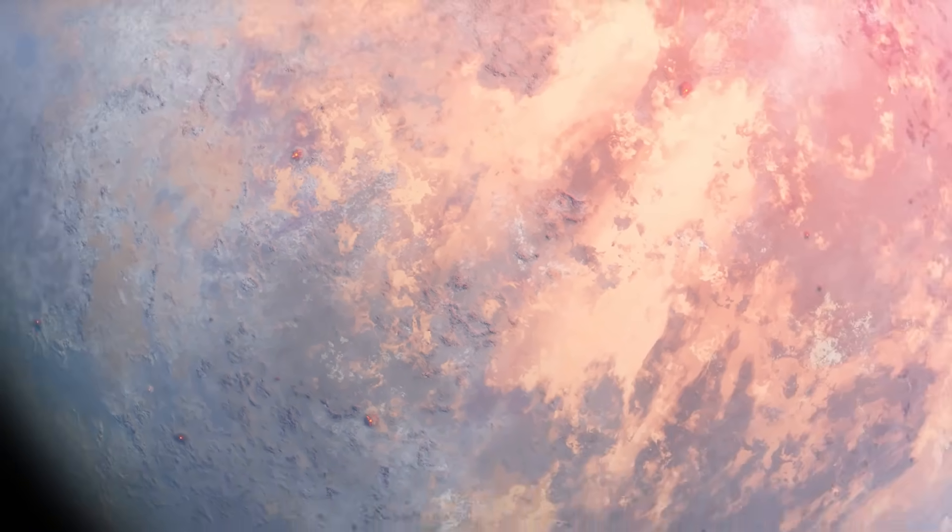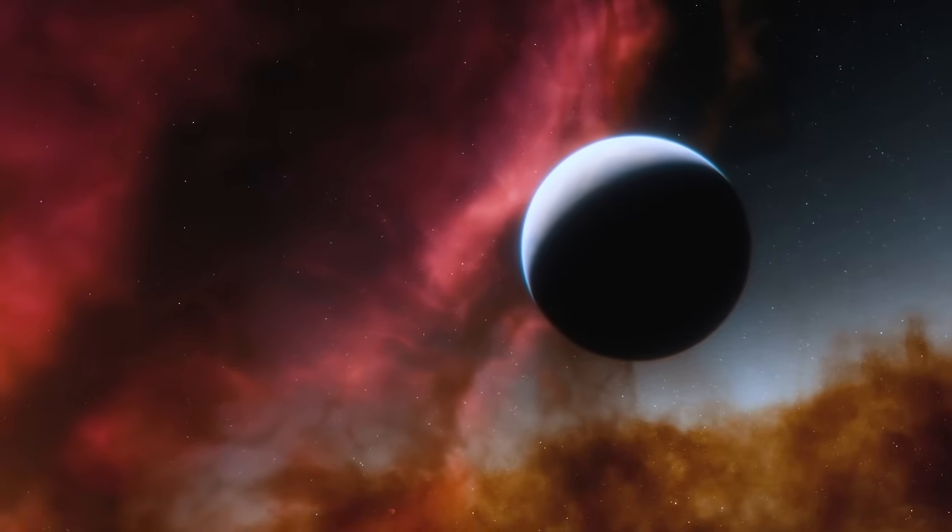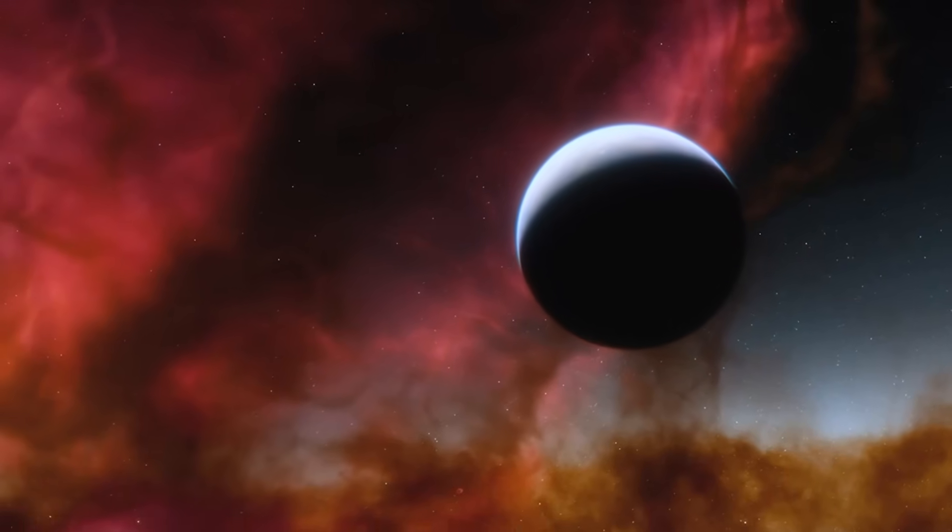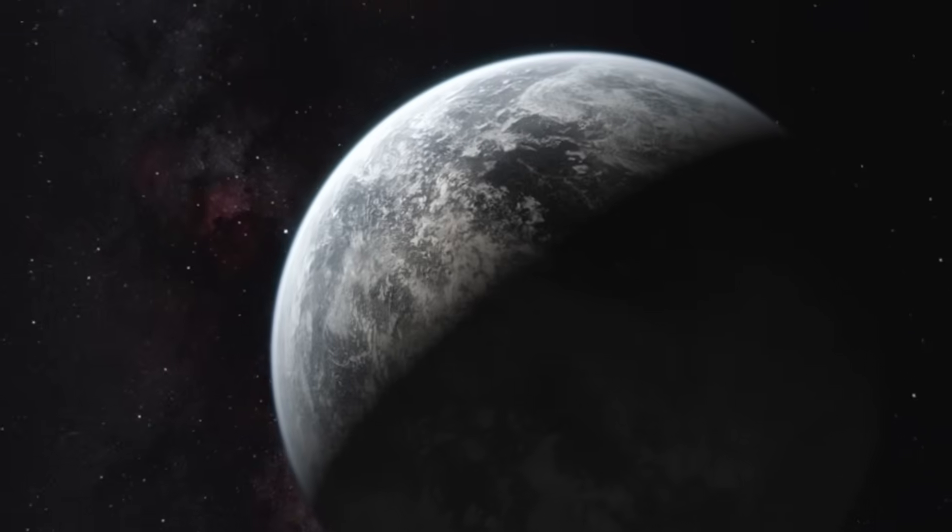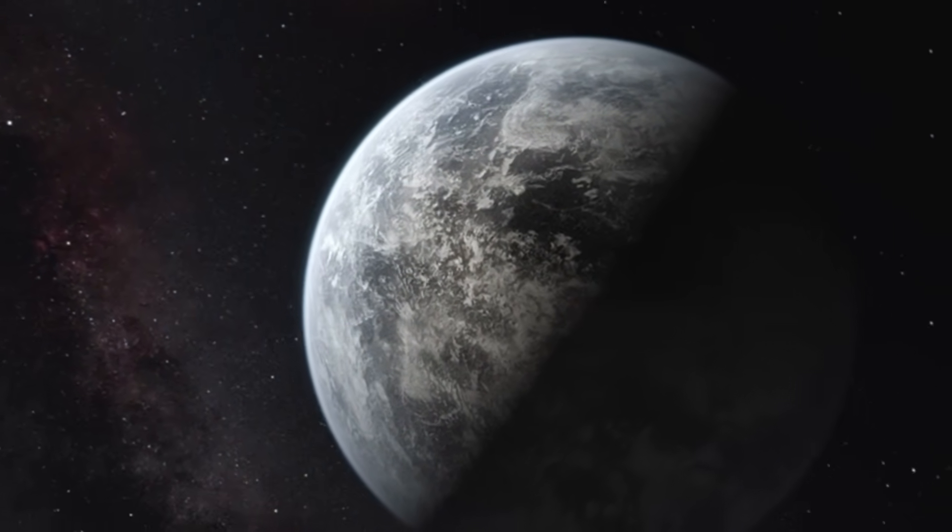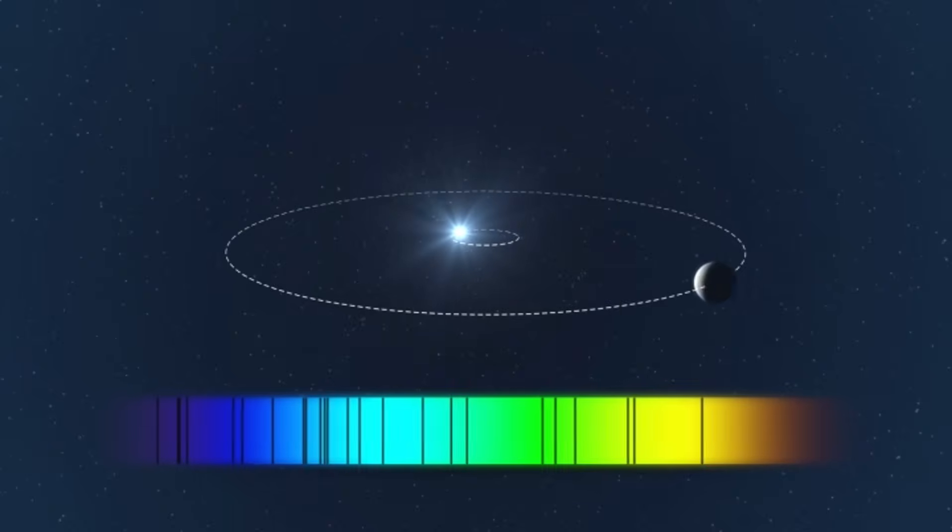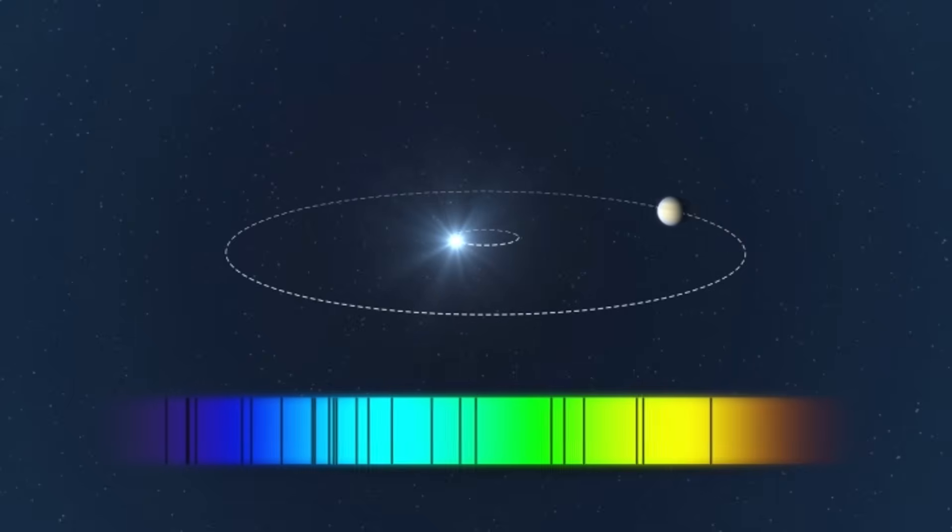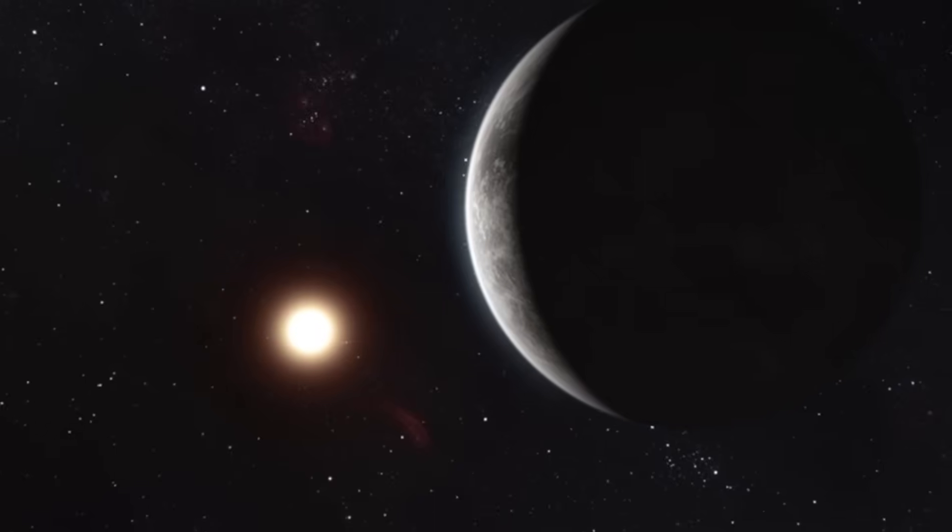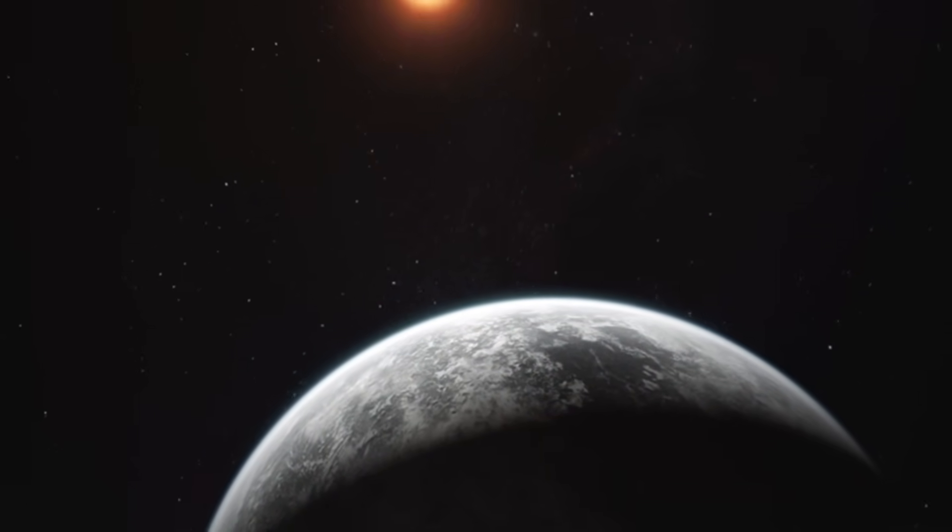But to accurately understand what K2-18b may conceal, we need to look at the conditions in which it exists. The planet orbits the star K2-18, a cool red dwarf located 124 light years away from Earth. Its orbit lies very close to the star, about 2.5 times closer than Mercury is to the sun. However, the star itself is much smaller, cooler, and dimmer than our sun. Thanks to this delicate cosmic balance, K2-18b receives approximately the same amount of heat and light as Earth. That's why it's considered potentially habitable.